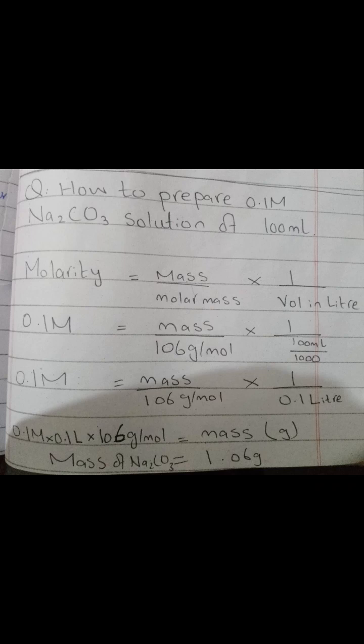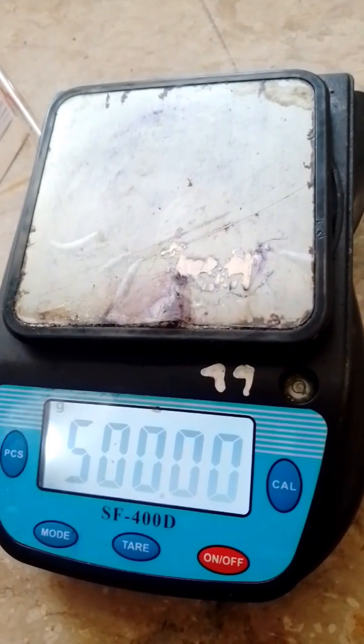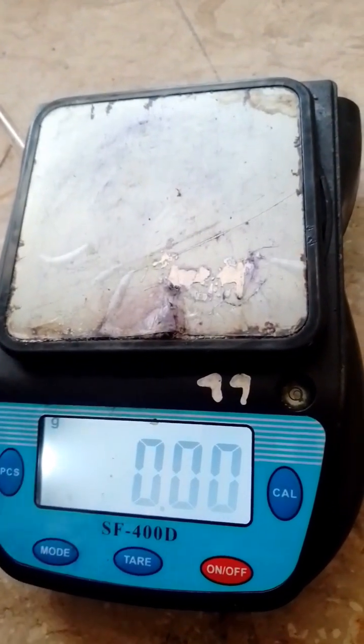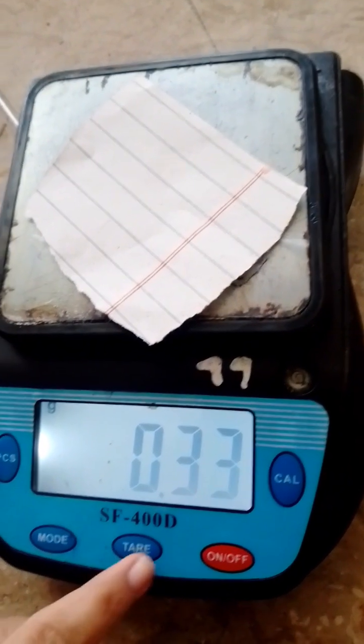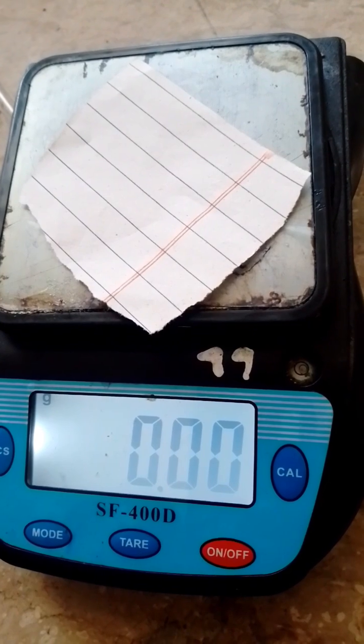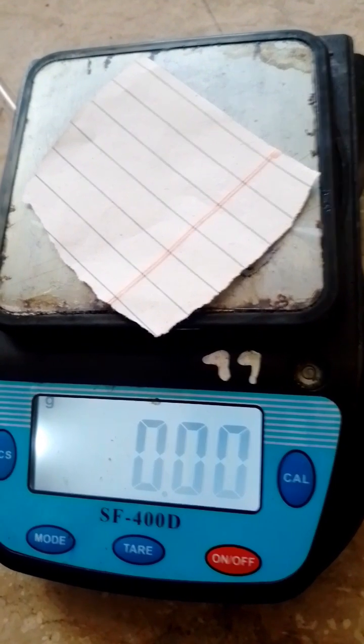For this, we divide 100 ml by 1000. And putting the value of molar mass of 106 gram per mole, we calculate the mass of sodium carbonate. Then take a weighing balance and place the paper on it and tare it to eliminate the weight of the paper.